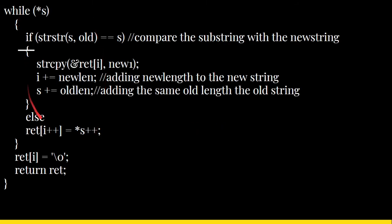We then set i to zero and start a while loop. The while loop compares the old string against each position in the given string and, when found, uses strcpy to copy the new string into the result in place of the old string. Then i is incremented by new_length and s is advanced by old_length.